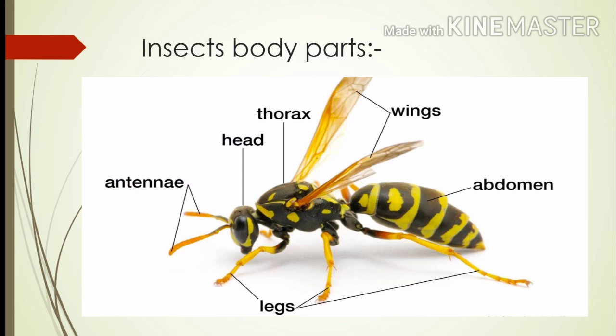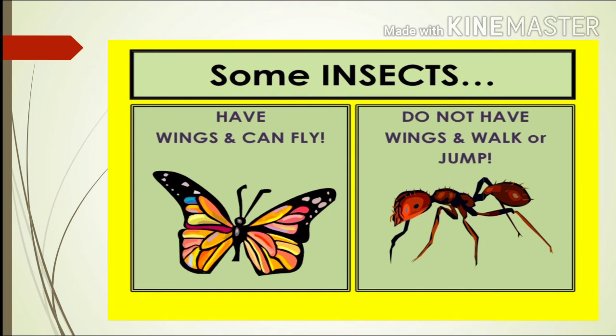The third and end part is called the abdomen. Some insects have wings so they can fly, but some insects do not have wings so they can walk or jump.